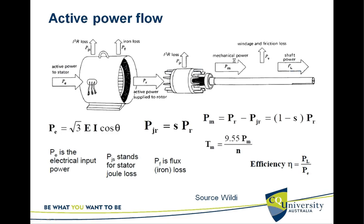At the same time, some of the mechanical power will be lost as frictional losses in the bearings and due to wind resistance — windage and friction losses. Finally, you can get shaft power, denoted as PL.